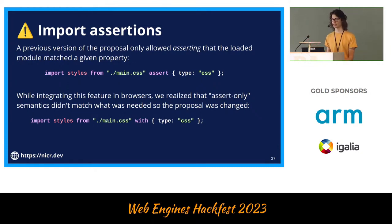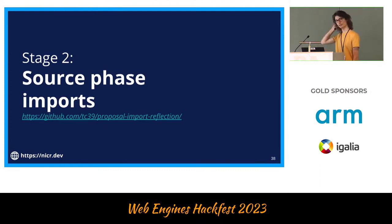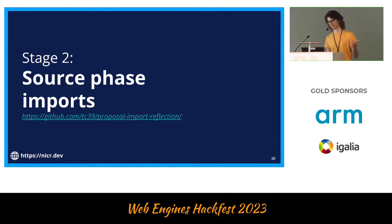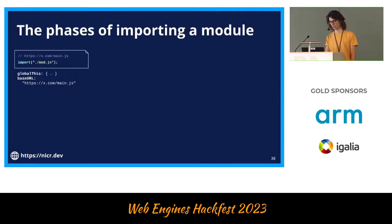The second proposal is Source Phase Imports, which is still at stage two — meaning we are still refining how the proposal should be done, and it's not implementation-ready yet, so things may change.